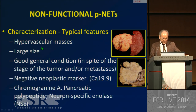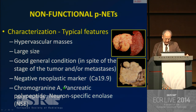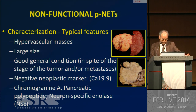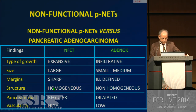Typically, these lesions are hypervascular masses large in size. But there are other typical features that are more clinical features, such as the good general condition of these patients, in spite of the stage of the tumor and the presence of liver metastasis at diagnosis. We have a negative neoplastic marker, negative CA19-9, which is a useful diagnostic tool to differentiate from pancreatic adenocarcinoma. We can also have elevation of other markers, like chromogranin A, which is more typical for neuroendocrine tumors.